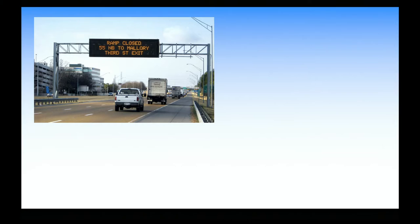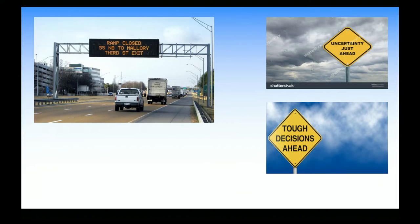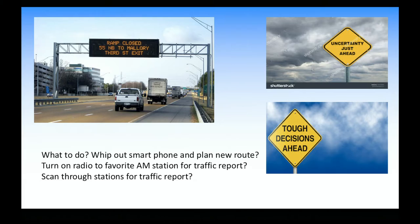Many of you have encountered this kind of setting where you're driving on a highway, maybe you're a passenger in a car, and you're planning to take 55 northbound to Mallory 3rd Street, and here you see this sign. Maybe the highway department needs to invent more signs — 'uncertainty just ahead' or 'tough decisions ahead.' You're in the passenger seat, you know this exit is supposed to come in a certain amount of time. You've got to decide how to find the alternative. One heuristic: pull out your smartphone and plan a new route. Another: turn on your radio and wait for the traffic report to cycle in. Third: scan the radio dial and try to find a station showing traffic at the moment.